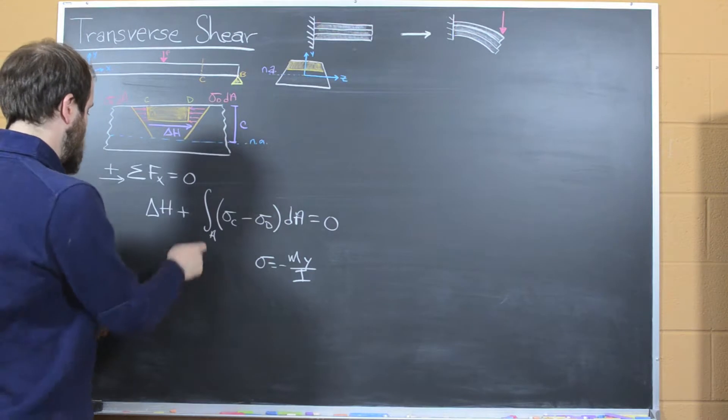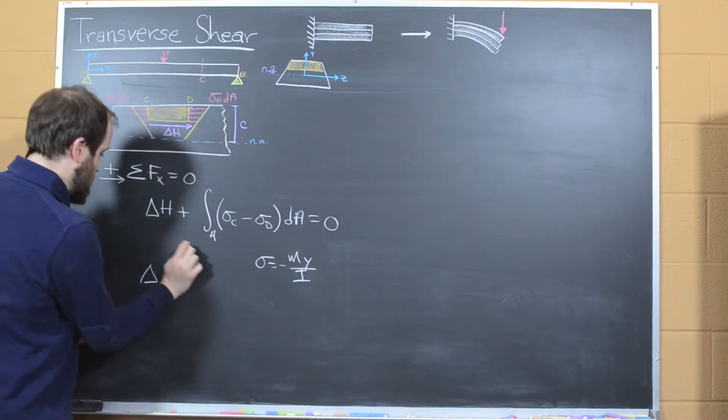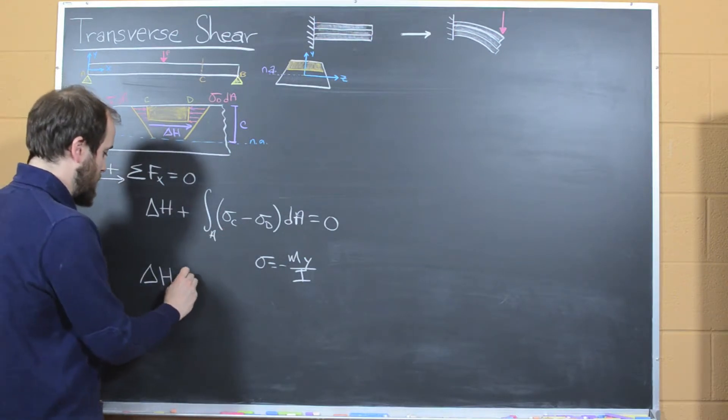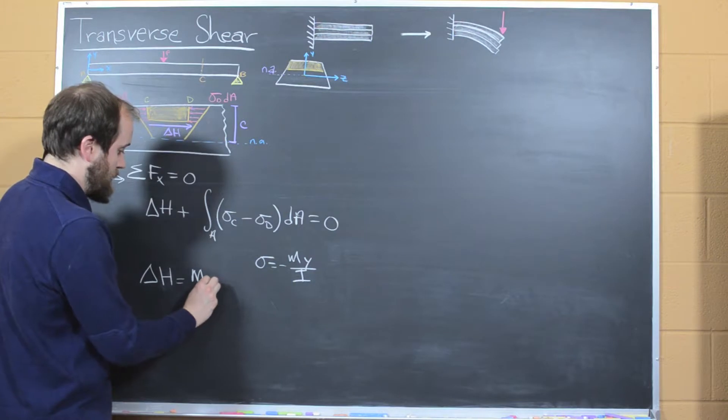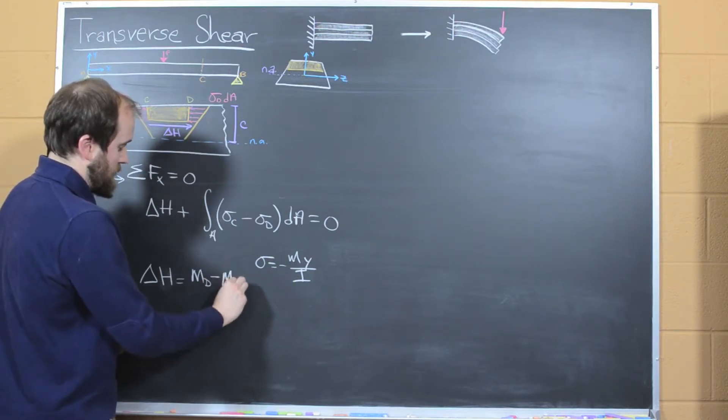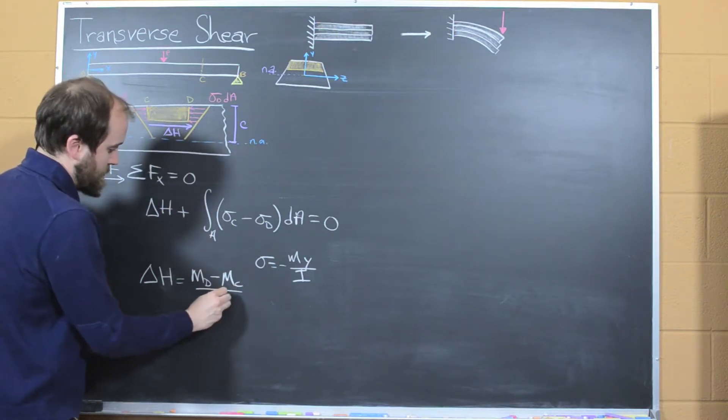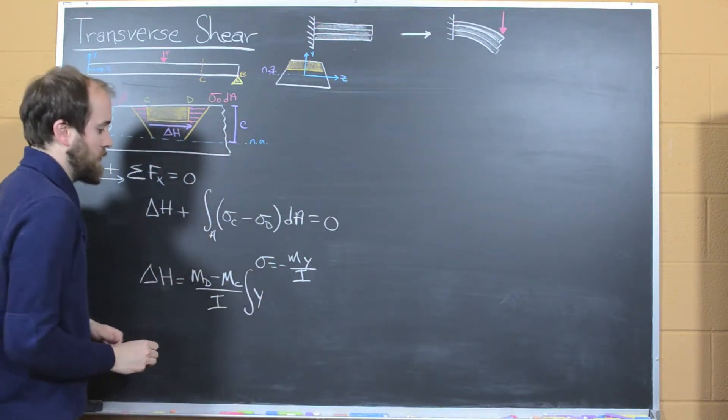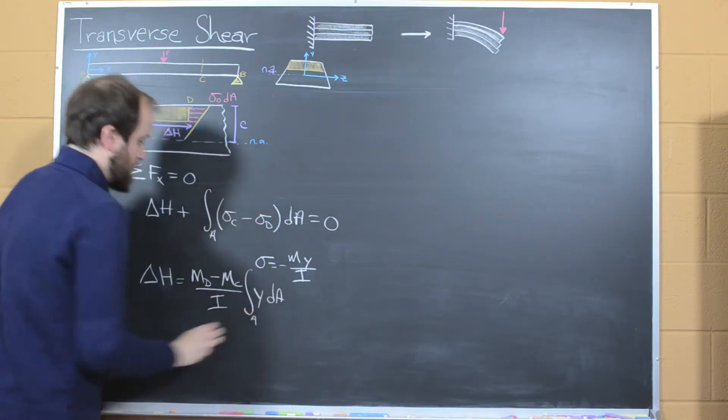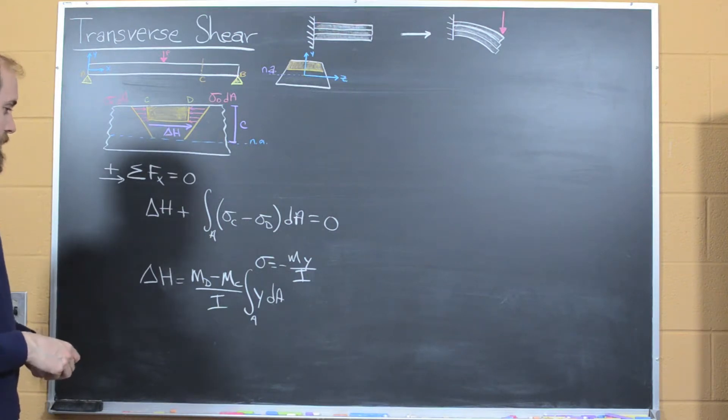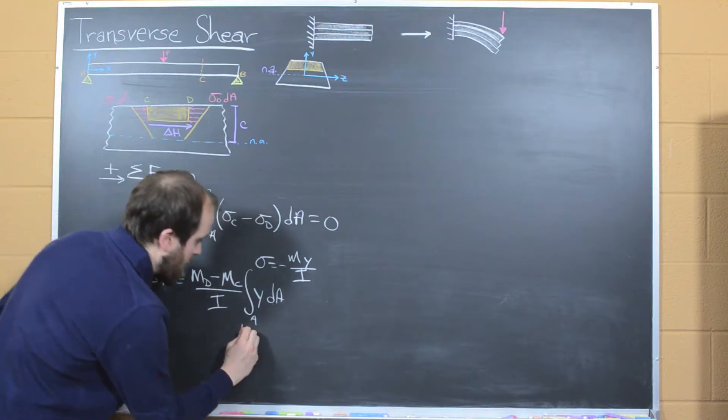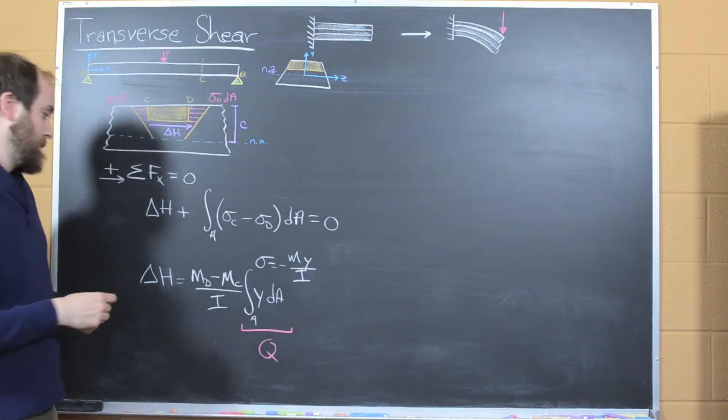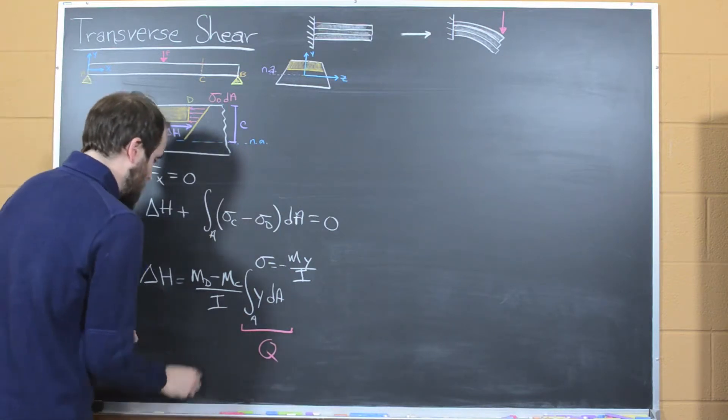So here's our equilibrium equation. And so what we can do is we can replace this here and rewrite it as delta H. And I'm going to move this onto the other side of the equation. I'm going to replace this. With a little algebra and switching some signs around, what we'll end up with is that MD minus MC over I. That can all be pulled outside the integral. And the integral that we're left with is integrating over y dA. And so now we can start to simplify things here. The first thing that hopefully should jump out at you is that the integral of y dA is simply equal to Q. That's our first moment of area.